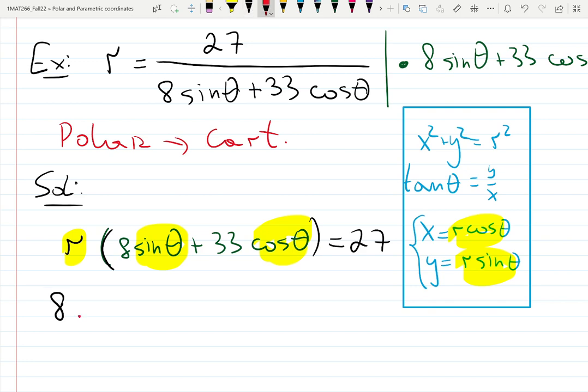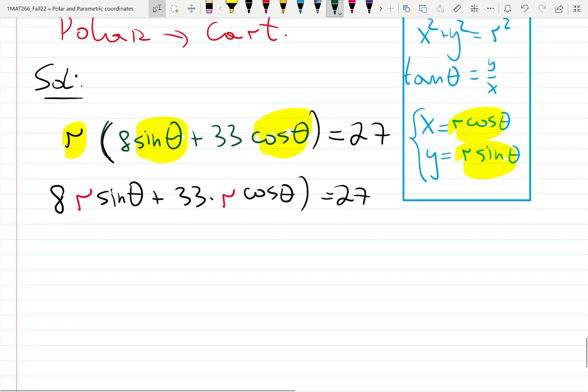Let's distribute R. R will go inside, becomes R sine theta plus 33 R cosine theta equals 27. You're staring a little bit on the formulas you know.